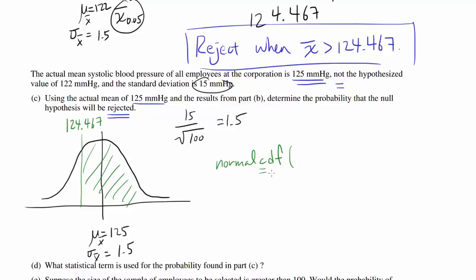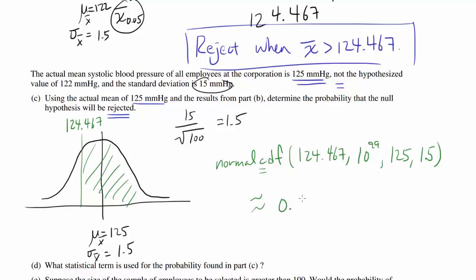Using the cumulative distribution function from 124.467 to infinity (or 10^99), with a mean of 125 and a standard deviation of 1.5, you should get a probability of 0.639.